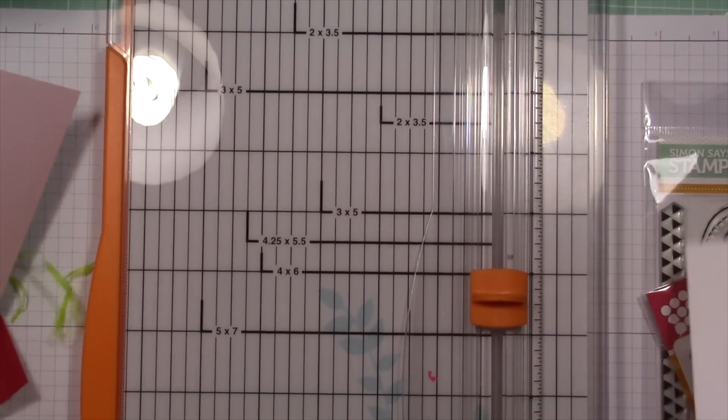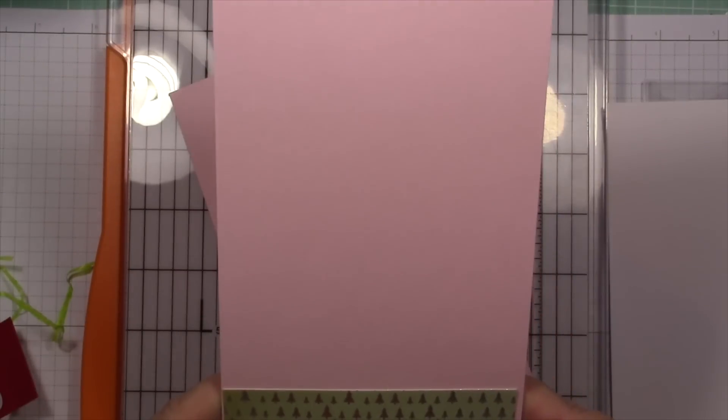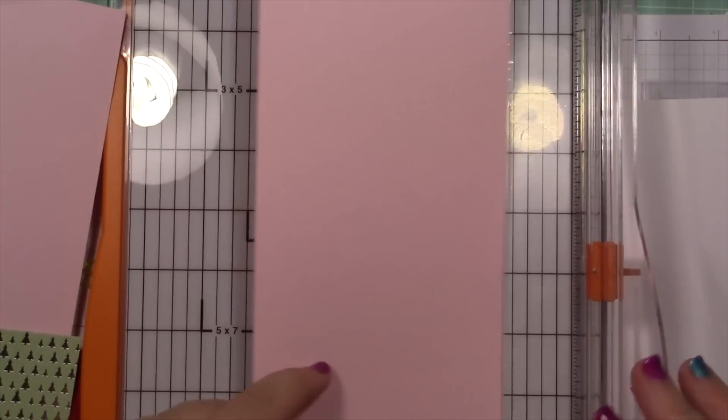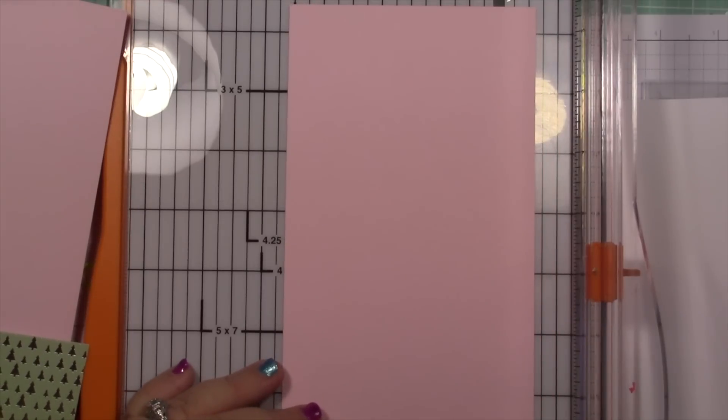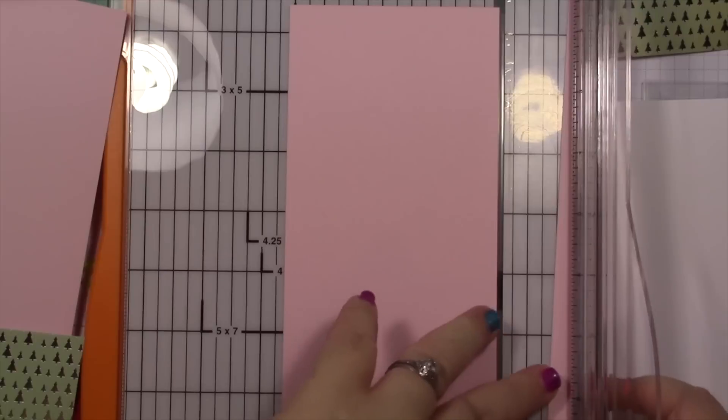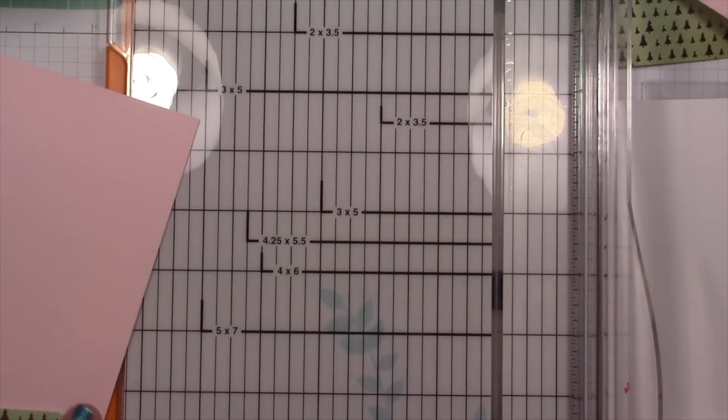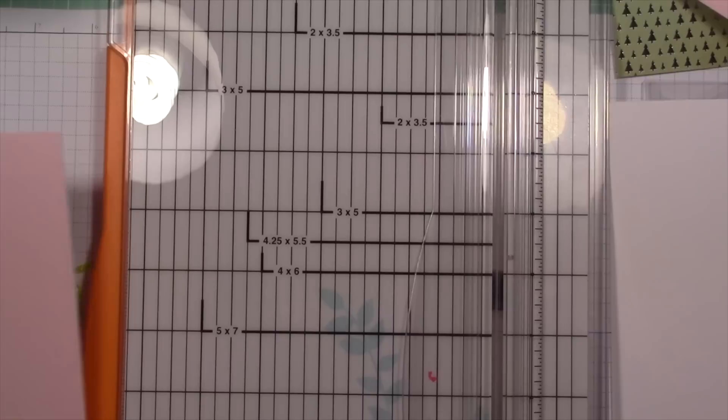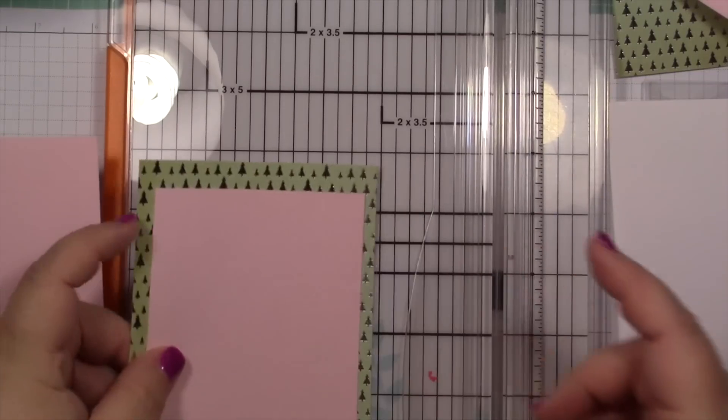I want this paper to be an eighth of an inch smaller, so we're going to do 4 1/8 inches wide and then 5 3/8 inches tall. Sorry metric people, I don't know the metrics. Then I want a layer for my piece, but I want this one to be way smaller.